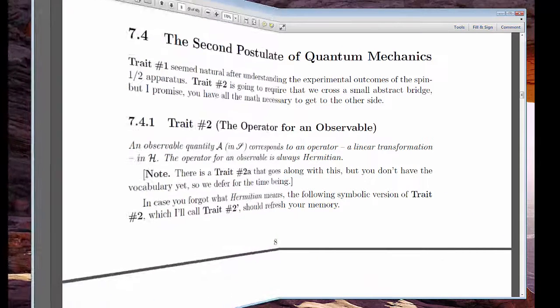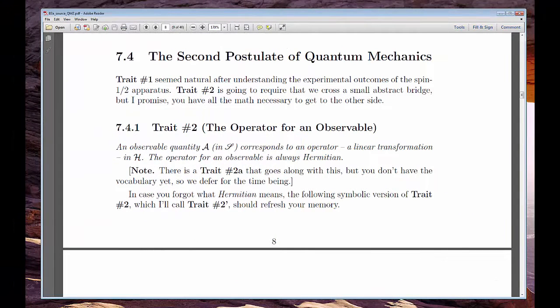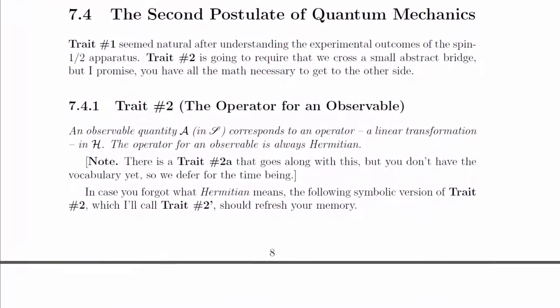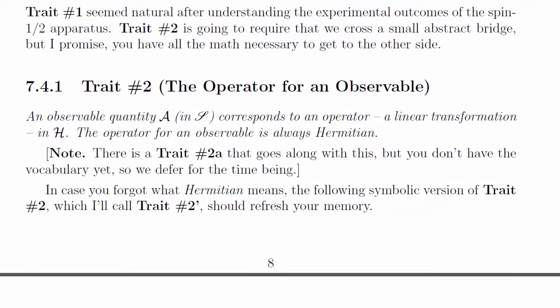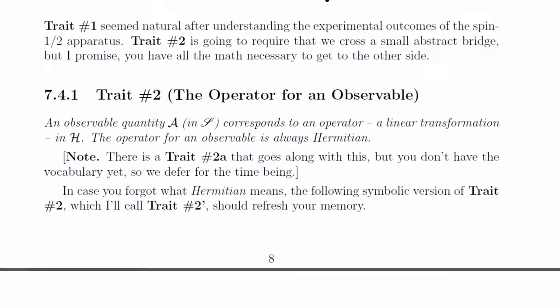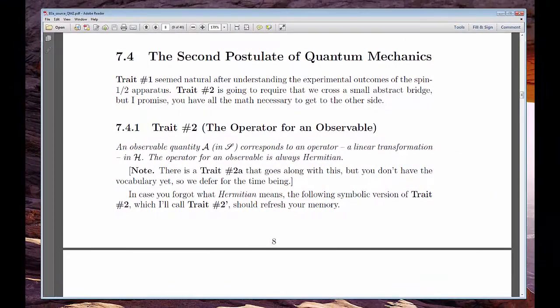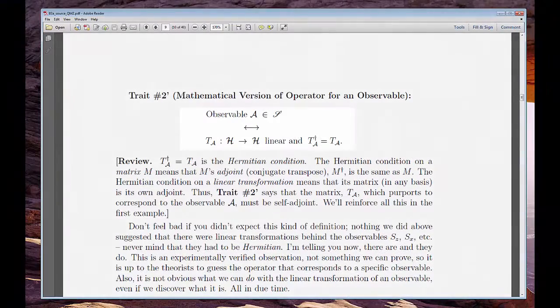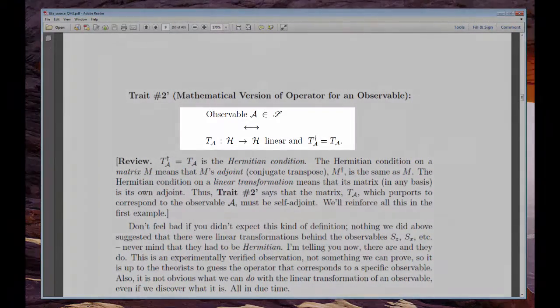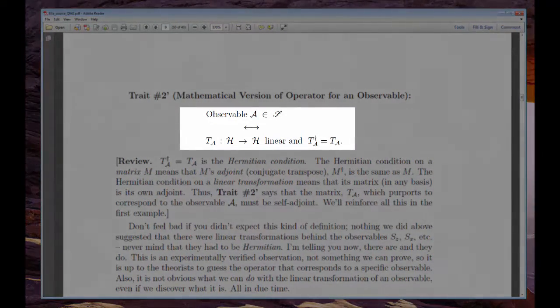The second postulate of quantum mechanics tells us that anything we can measure is called an observable, and observables correspond to special operators—that is, linear transformations in our Hilbert space. Those operators have the fancy-sounding property of being Hermitian. But keep it simple: the states are vectors and the observables are linear transformations.